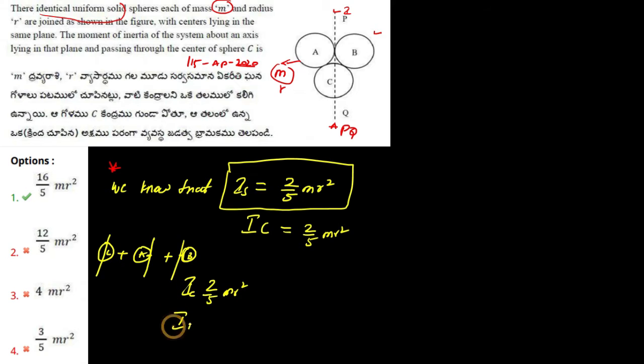Now I B will be equal to I C plus M R square, because this is the radius and mass of sphere is M. So it will be I B equals I C plus M R square, which equals 2 upon 5 M R square plus M R square, which equals 7 M R square upon 5.